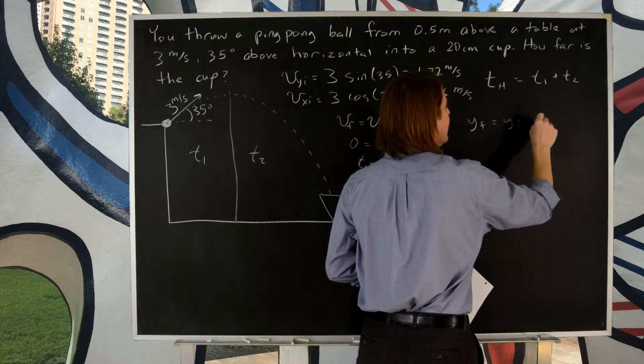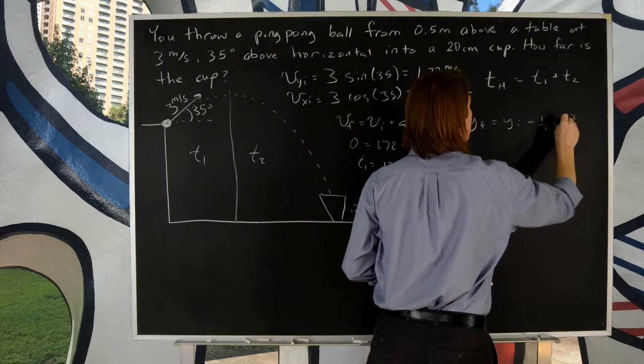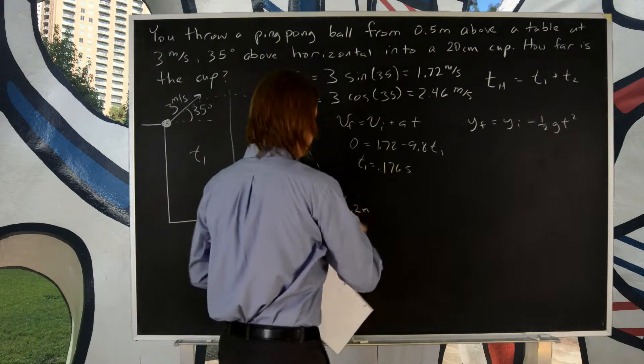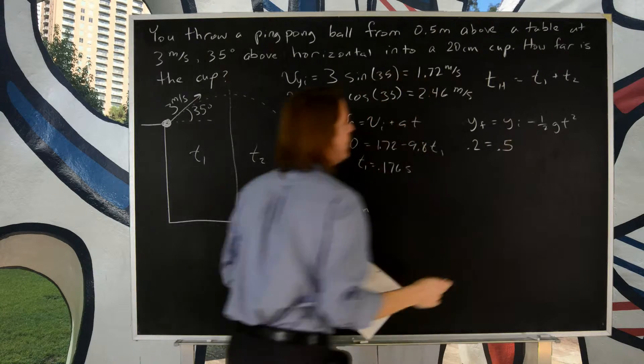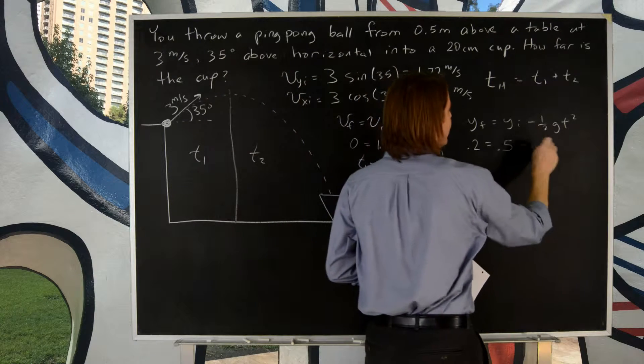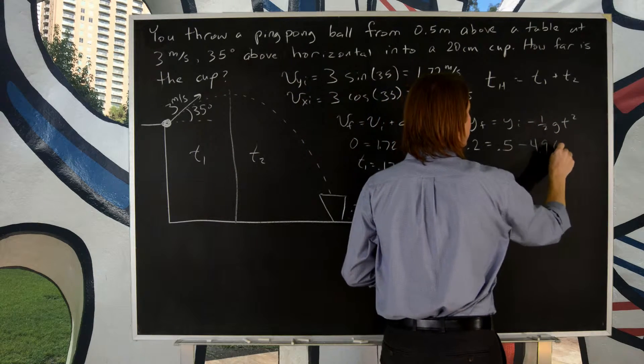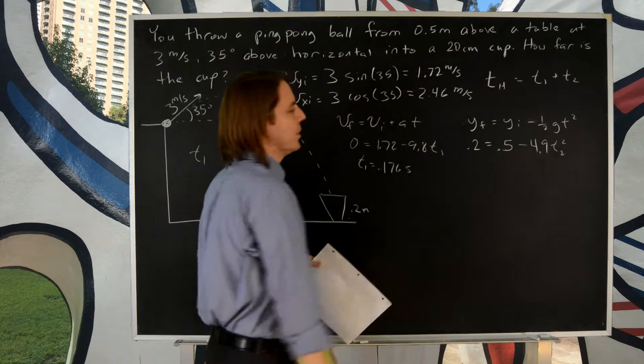But A is negative G. So we'll say minus 1.5 GT squared. So that would describe the y drop. So we just stick in our numbers. It's going to end at 0.2. It started at 0.5. All right, because we're starting at the top and falling to the bottom. Minus 1 half of 9.8 is 4.9 T squared. And that's T2 because we're doing it for a specific case.